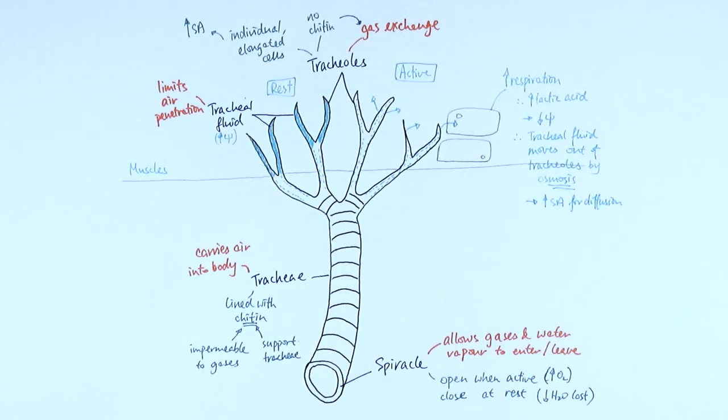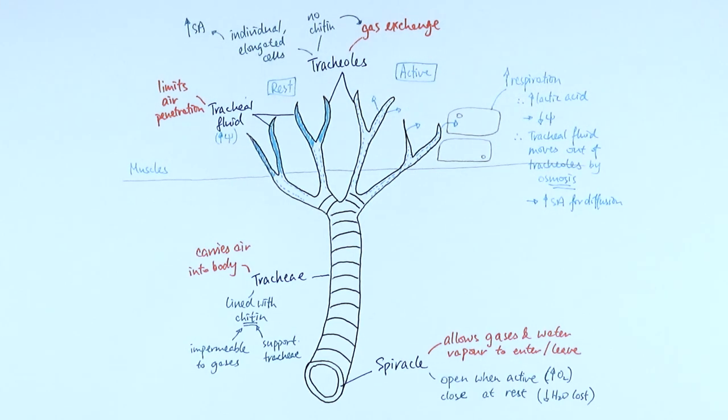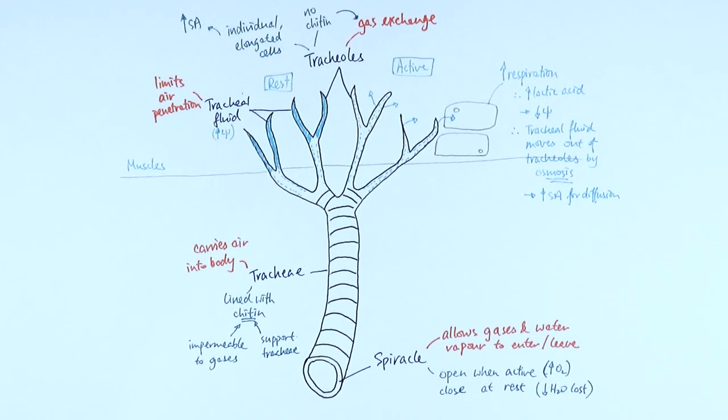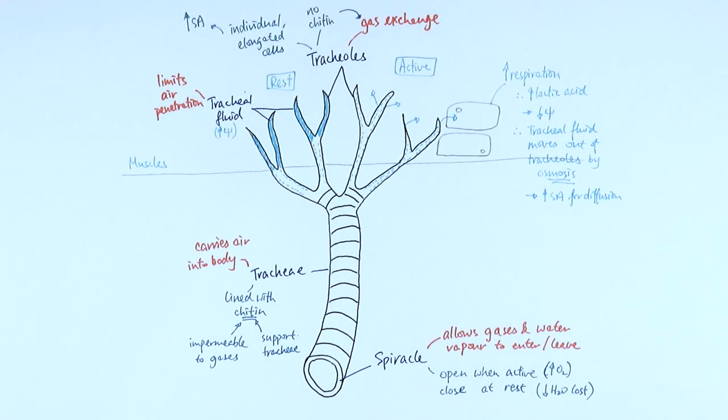So this is the whole structure of the gas exchange system in insects. We've got the spiracle first of all, which is basically the hole that allows the air to actually come in. And it's open when it's active and closed when it's at rest. Then the air will go through into the trachea, which is the main tube here. And that just simply carries the air into the body.